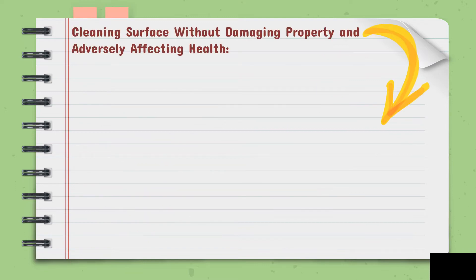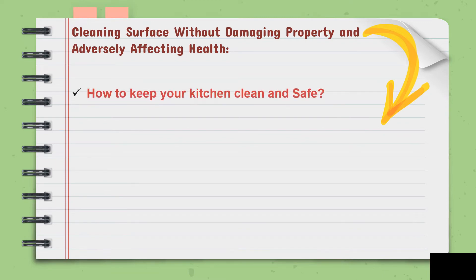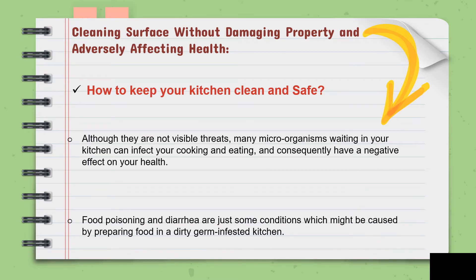The next topic is cleaning surfaces without damaging property and adversely affecting health. This is how we clean without ruining our kitchen premises or affecting our health — we should also be protected. How to keep your kitchen clean and safe: although they are not visible threats, microorganisms waiting in your kitchen can infect your cooking and eating and consequently have a negative effect on your health.